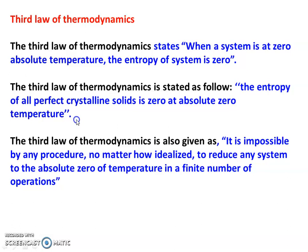Zero Kelvin equals minus 273 degrees Celsius, which is not at all possible to achieve. The third statement of the Third Law of Thermodynamics is also given as: it is impossible by any procedure, no matter how idealized, to reduce any system to absolute zero temperature in a finite number of operations. This third statement is very, very important.